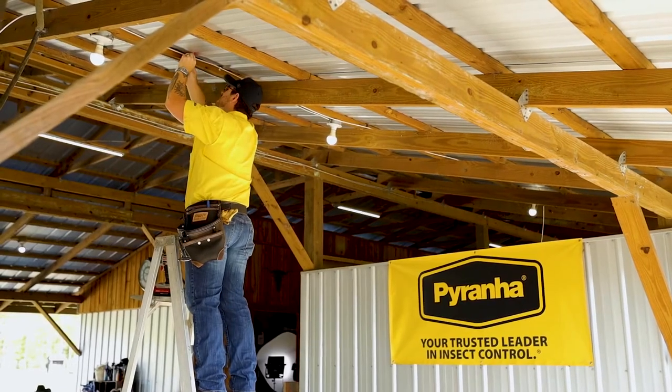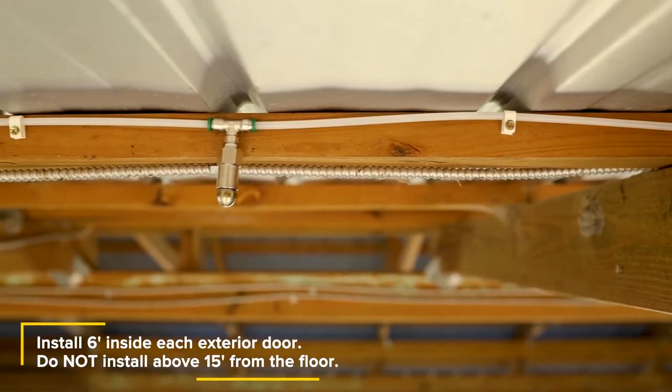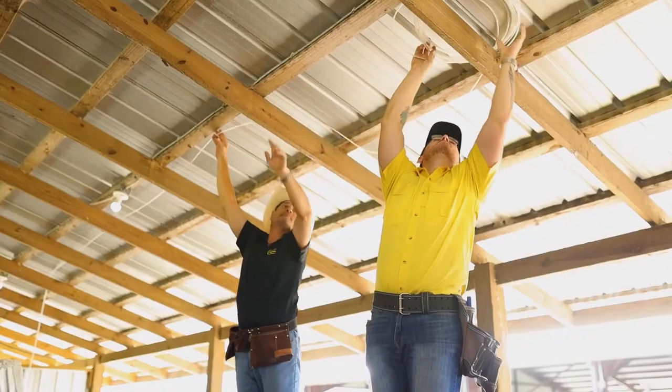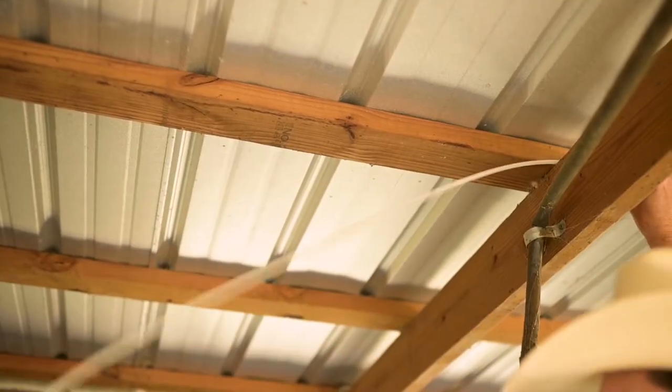Using the plastic nail or plastic ties, install the tubing and spray nozzles above the center of each stall and six feet inside of each exterior door. Make sweeping turns with the tubing around corners to avoid kinking.